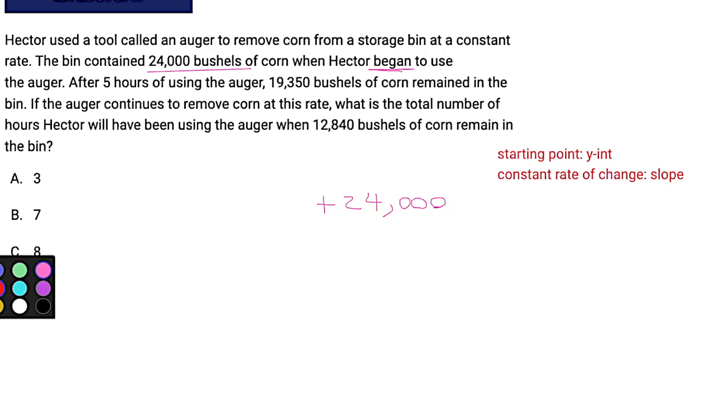But they did give us some stats, right? We know that we basically have two points. We have zero 24,000, because zero would be zero hours, right? So that's our x. And then we have five. They said at five hours, there were 19,350 bushels of corn. So what do you do if you have two points and you want the slope? Well, you use the slope formula. You might recognize this as y2 minus y1 divided by x2 minus x1. And the two y's and the two x's are just, you know, the given points, right?